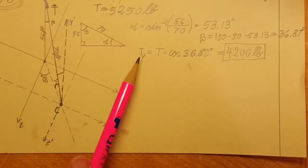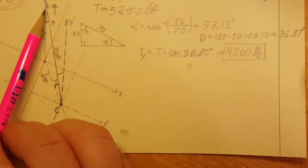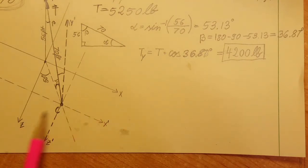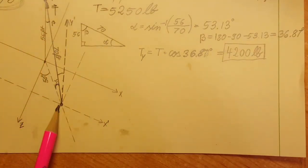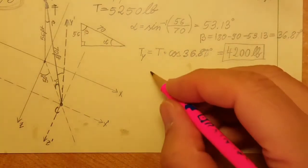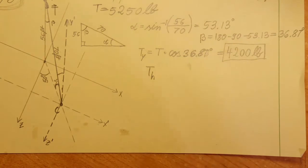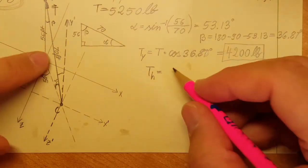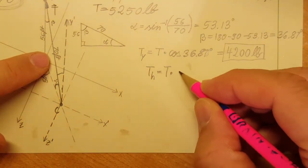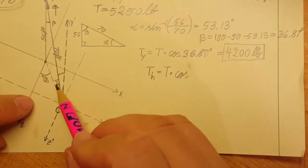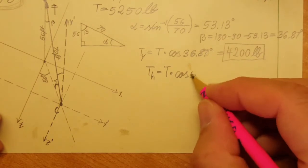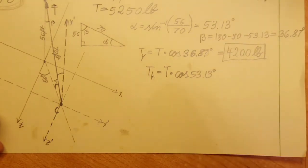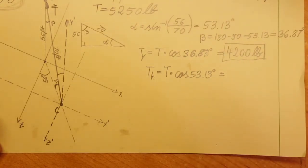Now we're going to use T and drop it down into the x and z plane. We're going to use the component which is down here, and I'm going to call this T_h for horizontal. We can calculate it as T times the cosine of alpha, which is 53.13 degrees. This gives us 3150 pounds.